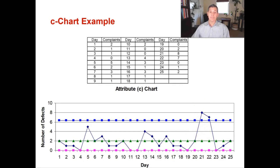And that's it. We have now calculated a P chart and a C chart. Those are our discrete metrics, and for those control charts your data is counted.